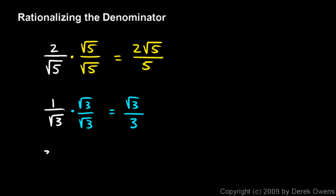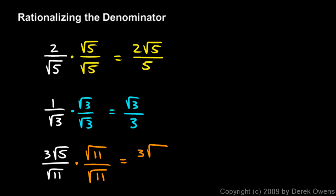The next example is 3 times the square root of 5 over the square root of 11. To rationalize the denominator here, I need to multiply by the square root of 11 over the square root of 11. When I multiply across the top, I have 3 times the square root of 55 over 11 — my 5 times 11, both under the radical, became 55 under the radical. Having a radical in the numerator is okay. On the bottom, the square root of 11 times the square root of 11 is just 11. So 3 root 55 over 11 is the simplified answer.